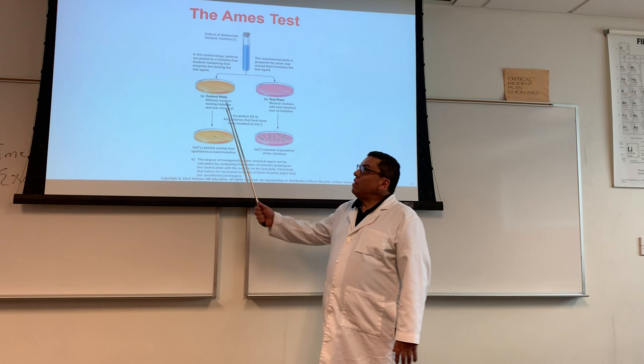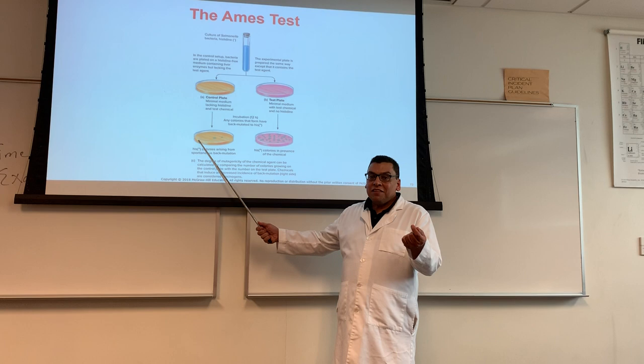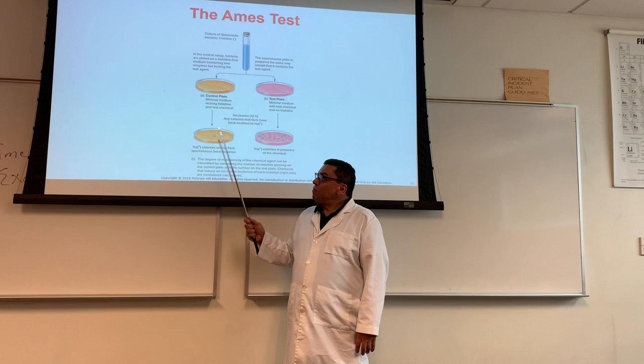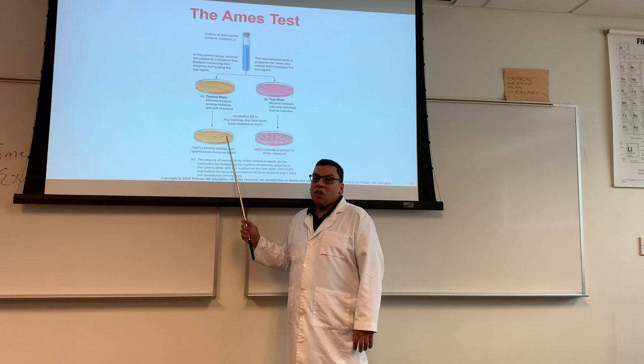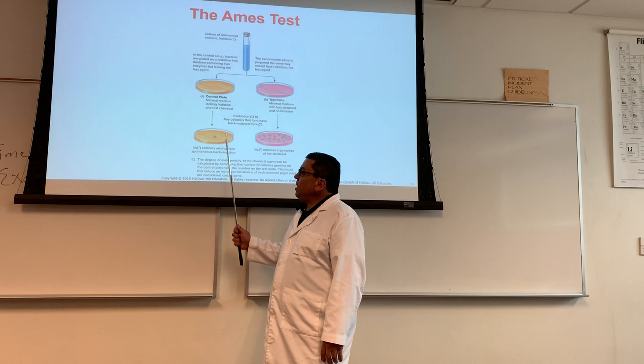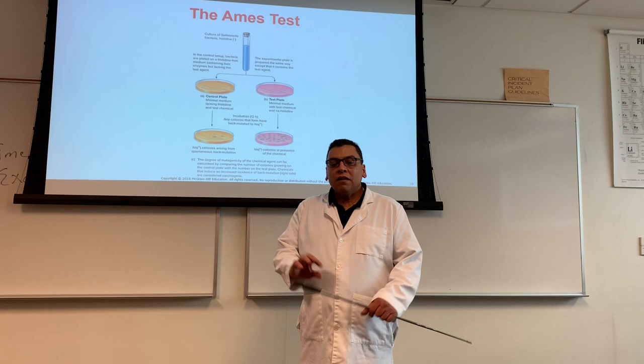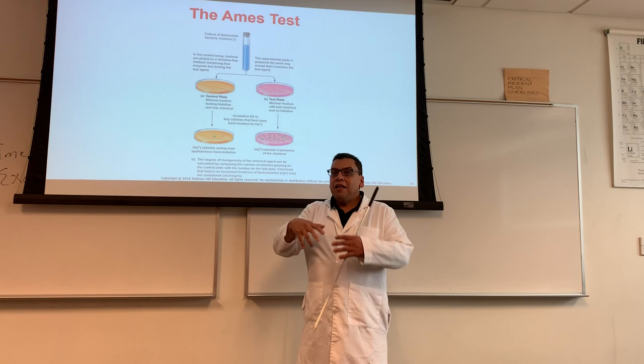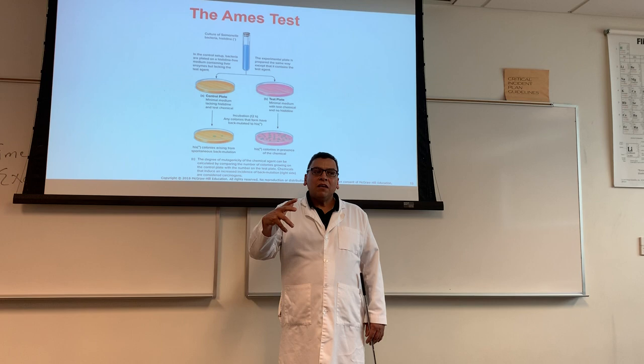Most of the bacteria you put on the plate will actually die because they will not get mutated. But some students ask: why are there colonies on the control plate? The reason is something called back mutation — meaning that by random chance, through spontaneous mutation alone, the bacteria mutated back to be histidine-positive.